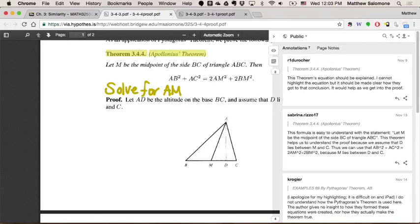So the length of the median, in terms of the lengths of the original triangle: AB, AC, and BC. Because after all, BM is just half of BC. So that's the utility of this theorem. It can let us discover what the length of the median in a triangle is.